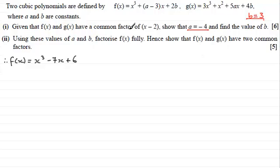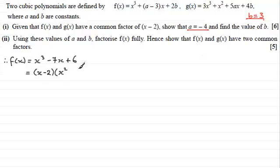We know it has a common factor of x minus 2, so this is going to be x minus 2 multiplied by a quadratic factor. That quadratic starts with x squared, because x times x squared gives us x cubed. I'll call the x term plus bx. The constant must be minus 3, because minus 2 times minus 3 gives us plus 6.